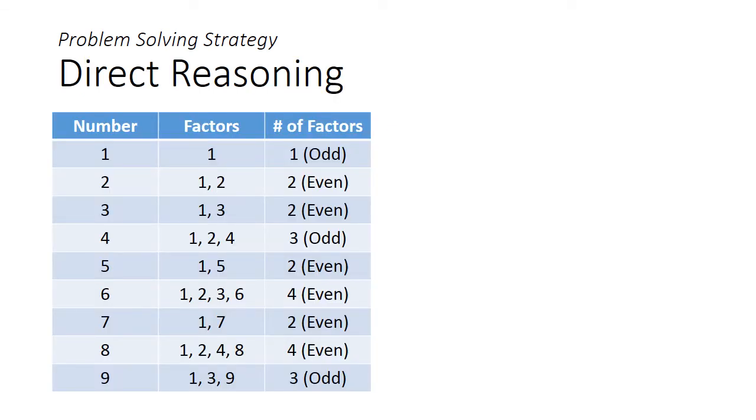Now let's take a direct reasoning approach. We can notice that the trigger that causes a locker to remain open or closed is whether the student's number is a divisor of the locker number. Hence, by listing the factors of each number, we will be looking for numbers with an even number of factors, as these lockers will remain closed.